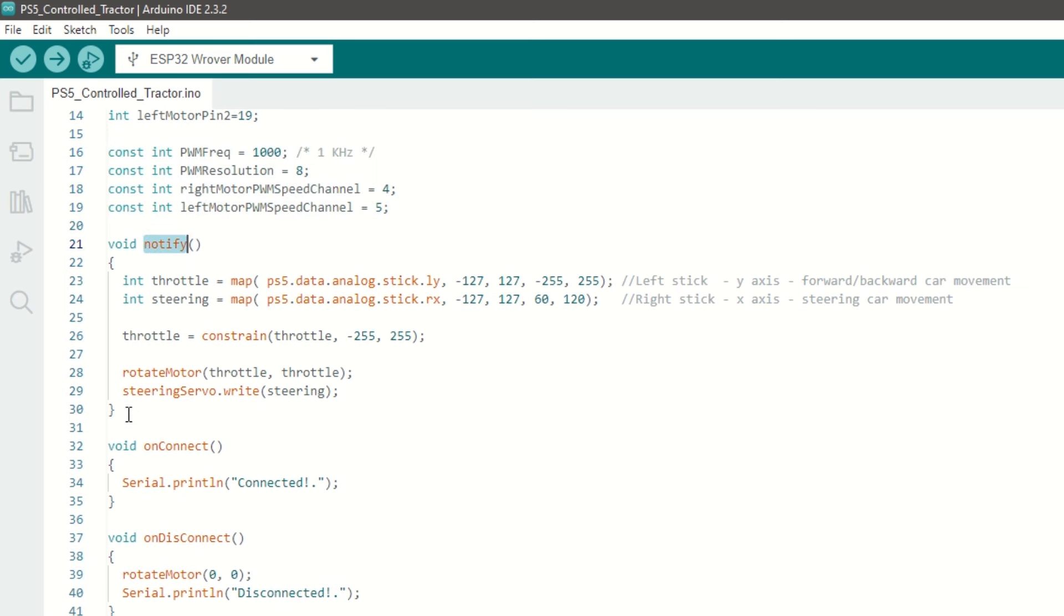We have created notify callback function which will be called whenever we receive data from PS5 controller. Inside this function we will read the left stick y-axis value and right stick x-axis value. Based on this value we will rotate the motors in forward or reverse direction. Also we will steer the car using servo motor.